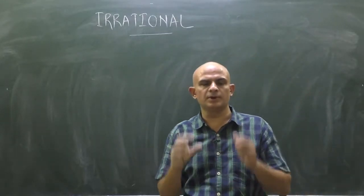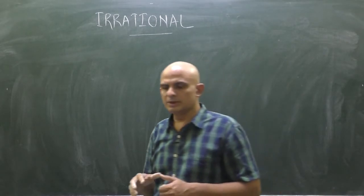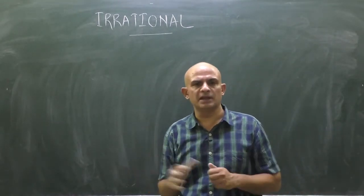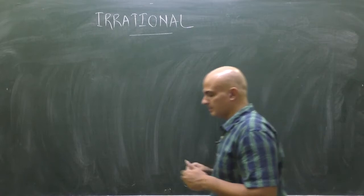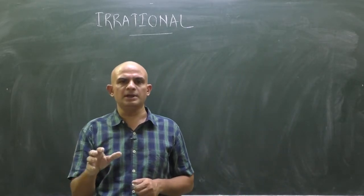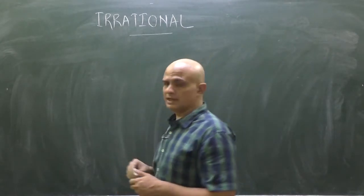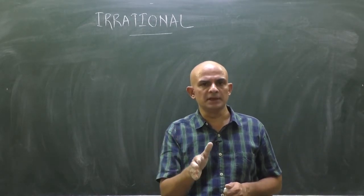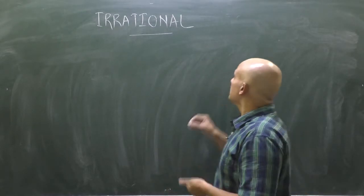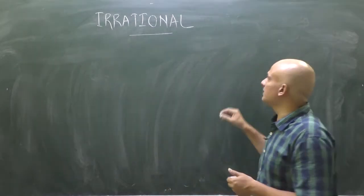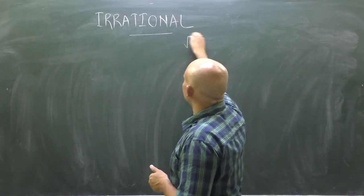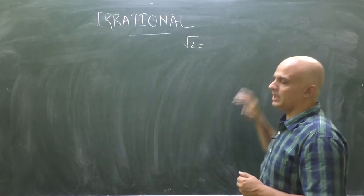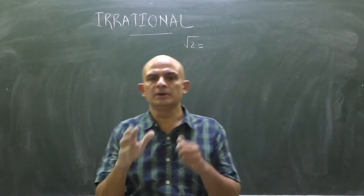In this video we are going to discuss irrational numbers. As we have discussed in an earlier video about rational and irrational numbers, irrational numbers are non-terminating non-repeating numbers. We do not know the exact value of root 2 because if we express it, its value will be non-terminating non-repeating.